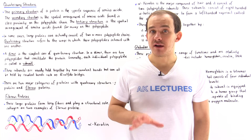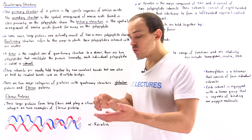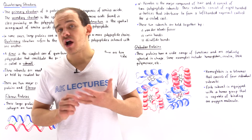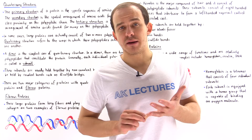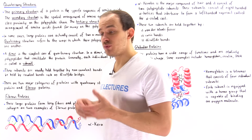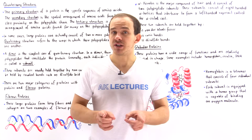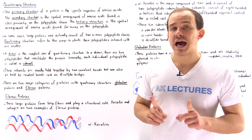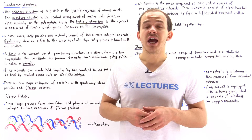Protein structure has different levels and so far we focused on three of these levels. We began our discussion on primary structure, which is the sequence of amino acids within a polypeptide chain. Then we moved on to secondary structure, which is the spatial arrangement of those amino acids — the interaction of amino acids found in close proximity on that polypeptide chain.